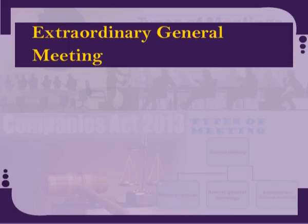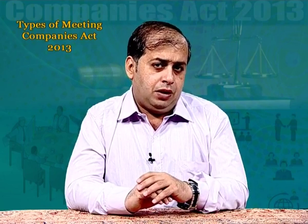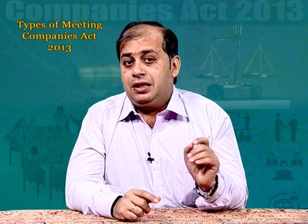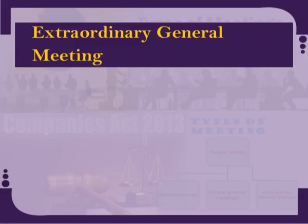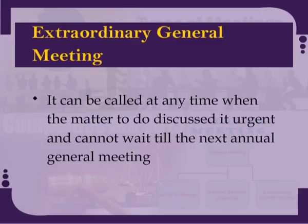Let us now discuss the extraordinary general meeting, also called EOGM or EGM. A statutory meeting and annual general meeting of a company may be called as ordinary meetings. Therefore, any other general meetings except the statutory and annual general meetings are called as extraordinary general meetings, that is EOGM. An extraordinary meeting can be called at any time when the matter to discuss is urgent and cannot wait till the next annual general meeting. In short, it is a general meeting held between two consecutive annual general meetings for transacting special or urgent business.